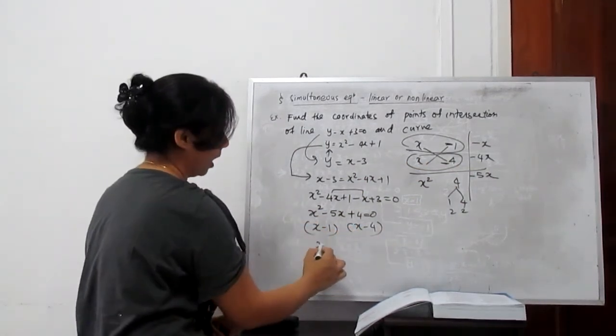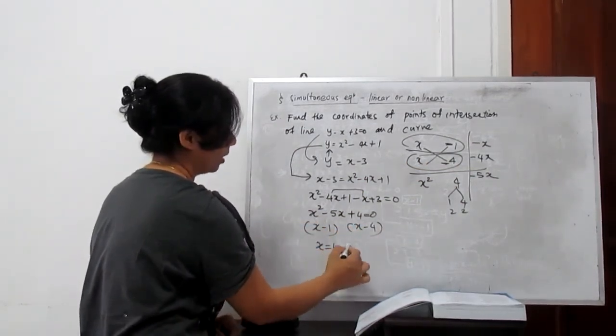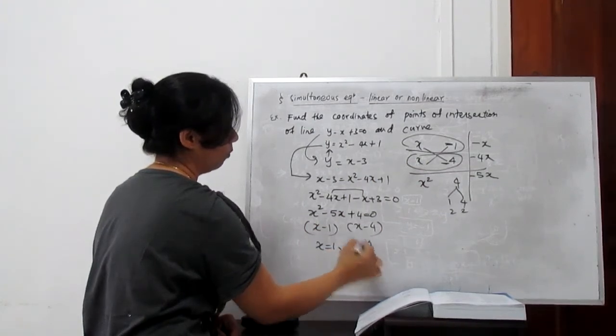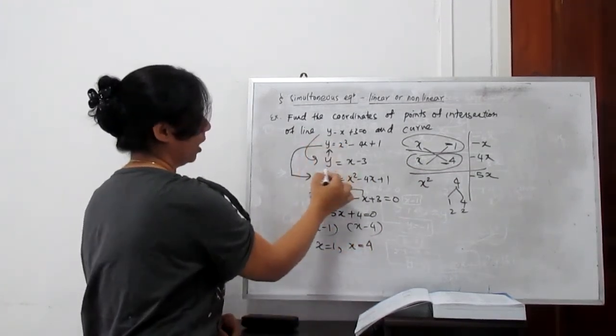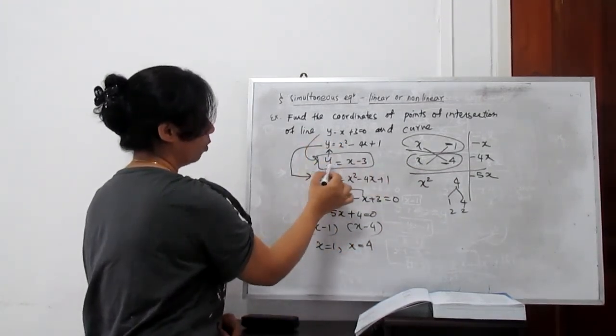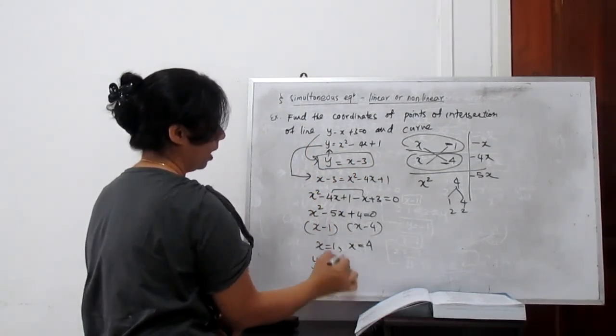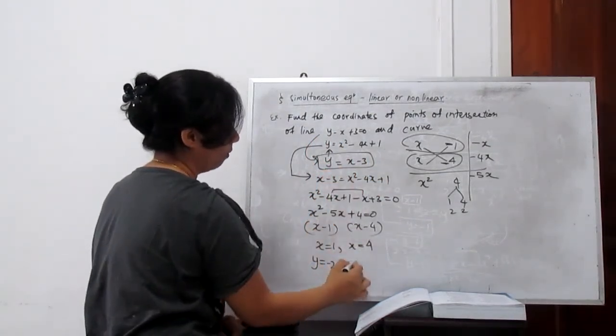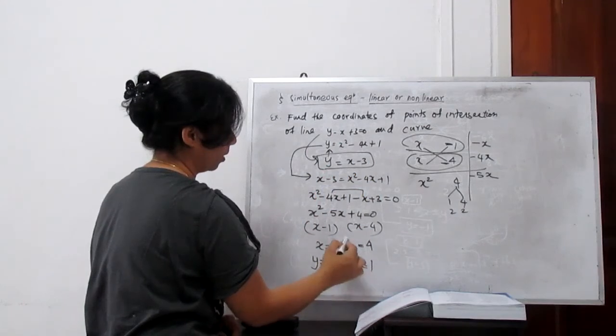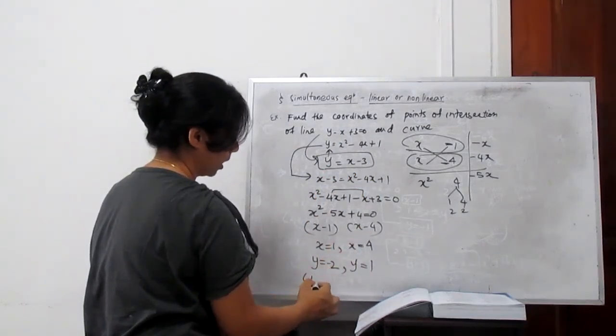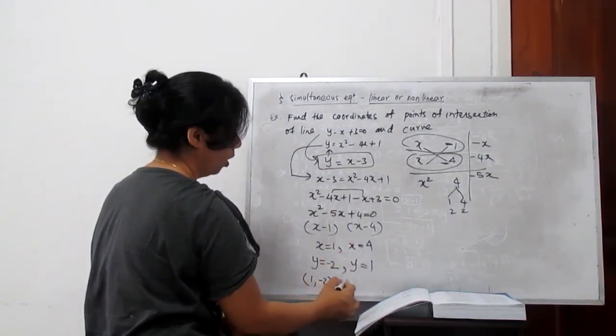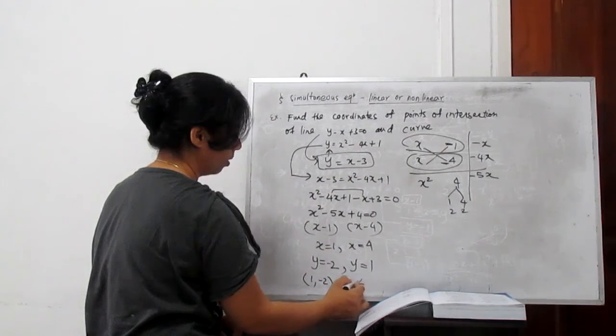From this we can say x equals 1. Another pair is x equals 4. Substitute here. When x equals 1, y will get minus 2. When x equals 4, y will get 1. So our point of intersection is (1, -2) and (4, 1).